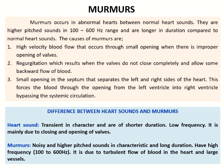The exact difference between heart sounds and murmurs: heart sounds are transient in character and of shorter duration, have low frequency, and are mainly due to opening and closing of the valves. Murmurs are noisy, high-pitched sounds synchronous with longer duration, having high frequency in the order of 100 to 600 Hz, sometimes 1000 Hz, and are due to turbulent flow of blood in the heart and large vessels.